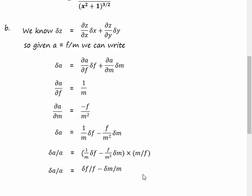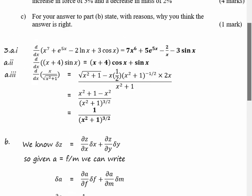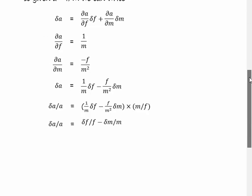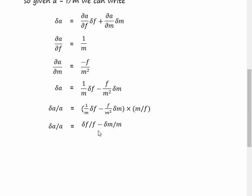So now I've got delta a over a equals delta f over f minus delta m over m. These are the percentage changes. Now let me just remind myself we've got an increase of three percent in the force and a decrease of two percent in the mass. So this term is the force and that's got an increase of three percent this term is the mass and that's got a decrease of two percent. So I end up with three percent minus minus two percent which gives me a net increase in acceleration of five percent.